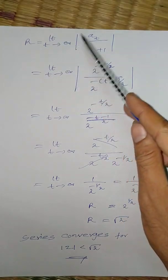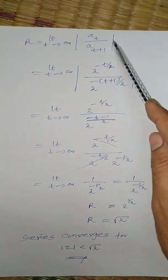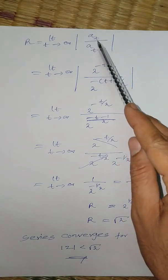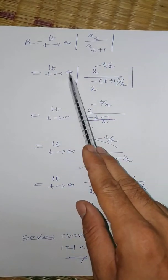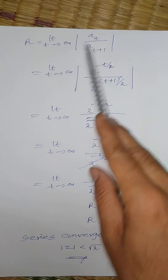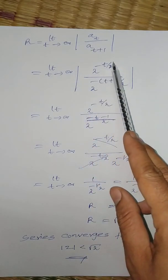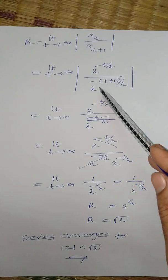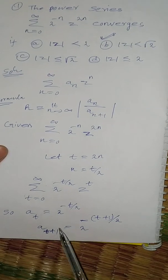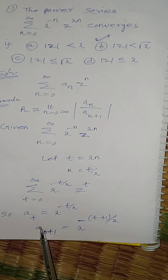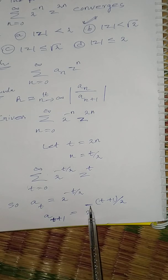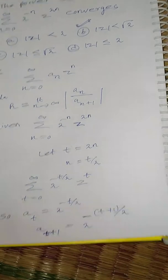r equal to limit t tends to infinity. This is the formula. Instead of an, an equal to at in terms of at. t tends to infinity. At is 2 power minus t by 2. At plus 1 is 2 power minus t plus 1 divided by 2.